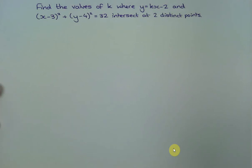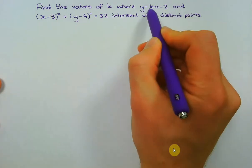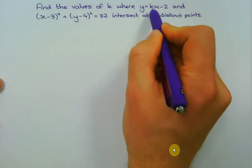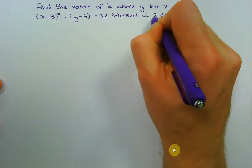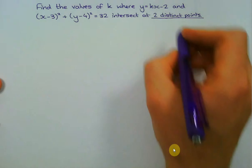Hi there guys, in this video we're going to have a look at where this circular graph intersects with this linear graph. This is a pretty tough question because we don't actually know this figure, but we are told that it intersects at two distinct points.